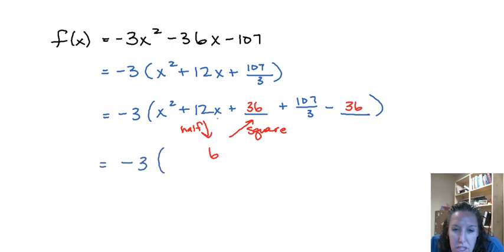So inside the parentheses our first three terms we're going to factor to x plus 6 quantity squared. When we add 107 over 3 minus 36, we get a common denominator there.